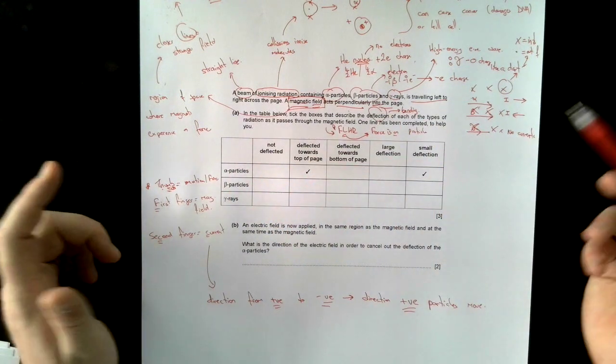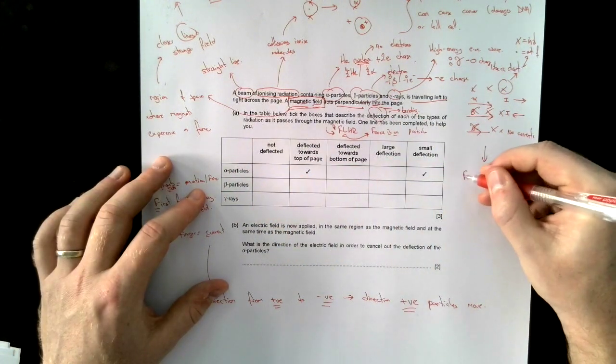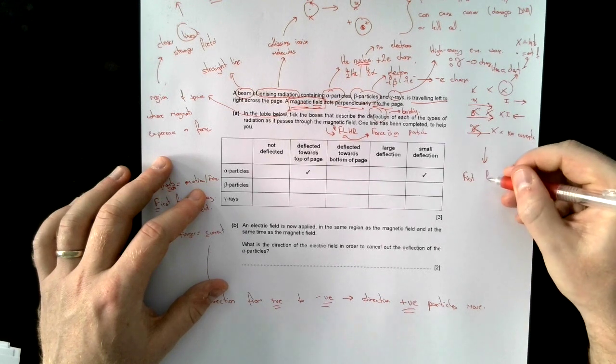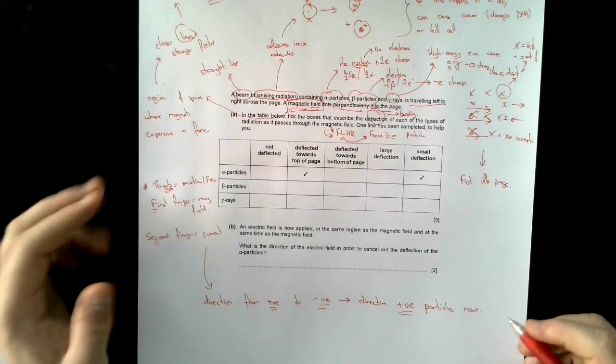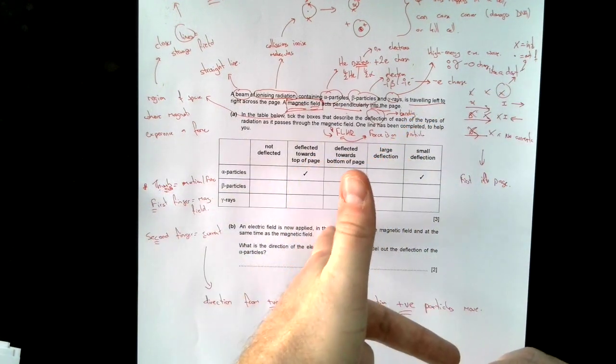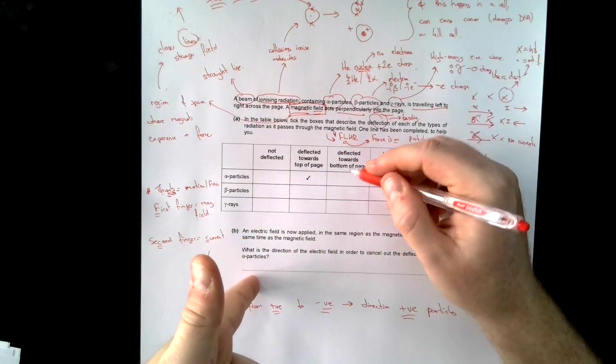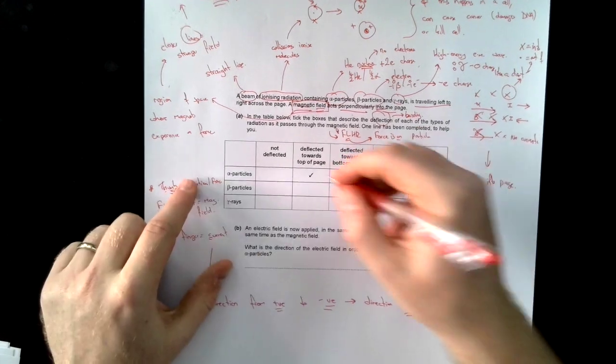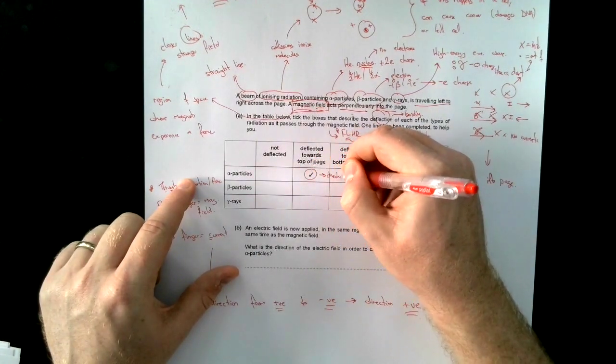So then it becomes relatively easy. In this case, I need first finger into the page. So with my left-hand rule, first finger into the page. Second finger pointing in the direction that I've drawn it. So the alpha particle will be deflected towards the top of the page. I've checked, and that's okay.